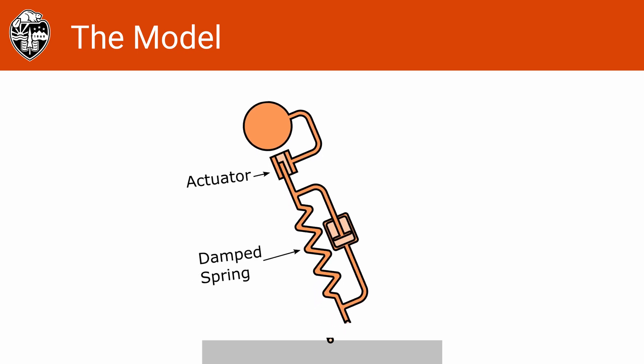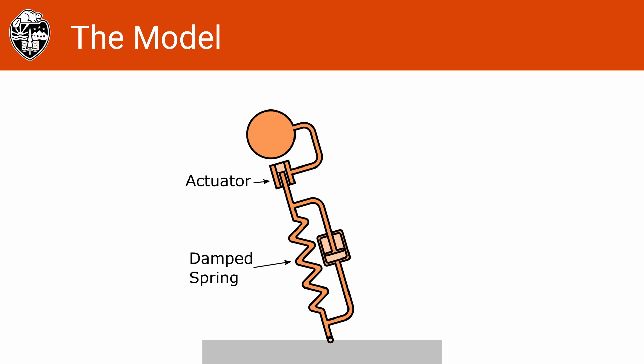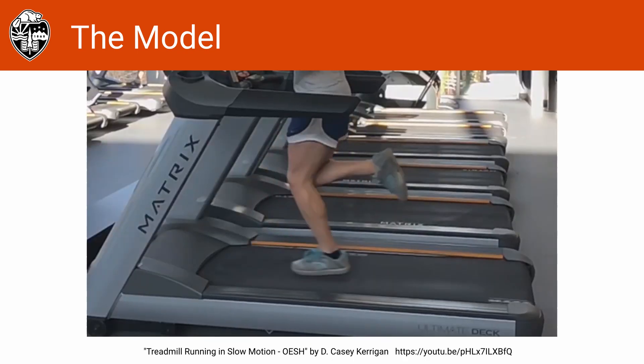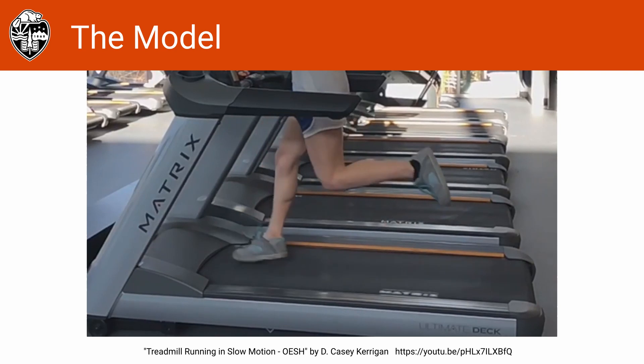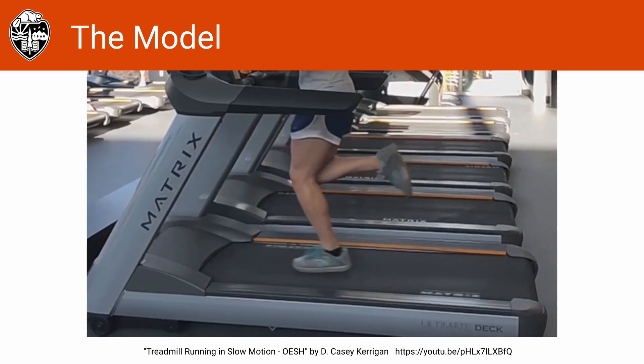This model has two avenues of control actions. First, it can control the touchdown leg angle once per step. Second, it can command an acceleration to the leg actuator throughout all of the motion. The open loop plan we seek describes both of these. Actuator acceleration is a function of time and leg touchdown angle as a function of time. The leg touchdown angle changing as a function of time describes leg swing behavior which we see in human running.